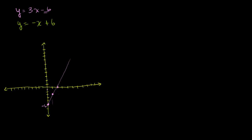Now for the other line, the y-intercept is plus 6, and the slope is negative 1. So every time we go 1 to the right, we go down 1. When y is equal to 0, x is equal to 6. So this line will look like that.